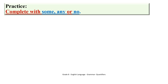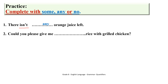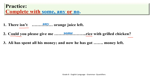Practice: Complete with some, any, or no. 1. 'There isn't ___ orange juice left.' The best answer is 'any' because it is a negative sentence. 2. 'Could you please give me ___ rice with grilled chicken?' The best answer is 'some' because it is a polite request, and rice is an uncountable noun. 3. 'Ali has spent all his money, and now he has got ___ money left.' The best answer is 'no' because the sentence is affirmative but has a negative meaning — it means he hasn't got any money.